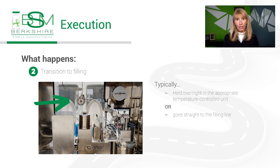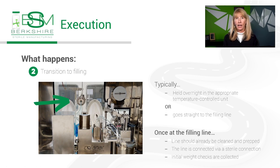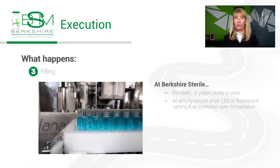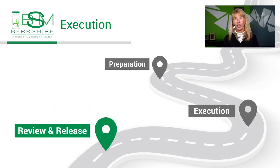At BSM, this is performed by a dedicated formulation team within a grade C class 10,000 clean room. Some products are a simple thaw, mix, and filter. Other products require putting a powder drug substance into a solution and adding excipients. Everything, including how long the product is mixed, in-process analytical testing, and the exact measurements of every excipient added, is recorded into the batch record and verified by another supporting employee. Once the product is formulated, it would be held overnight at the appropriate temperature controlled unit or go directly to filling.